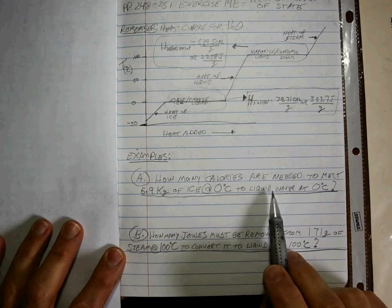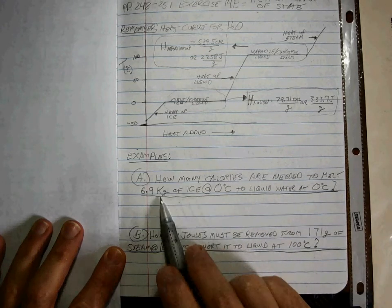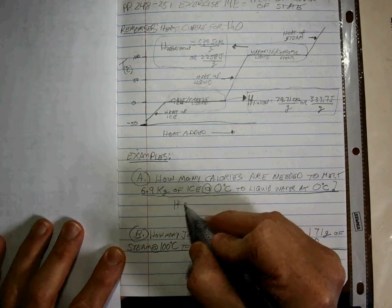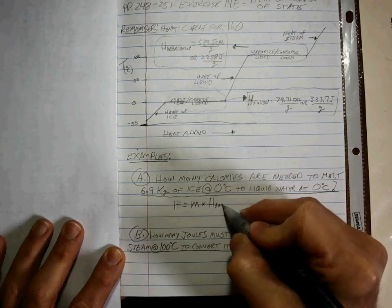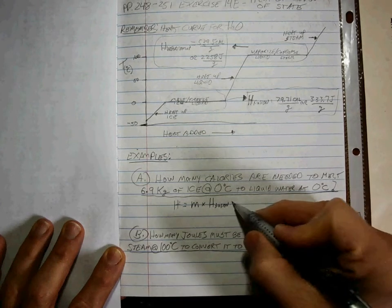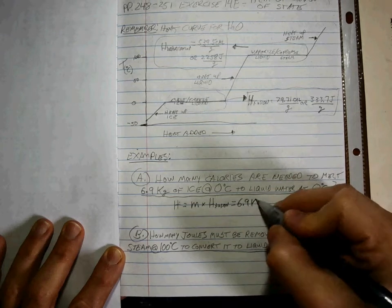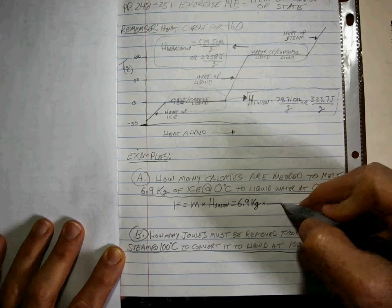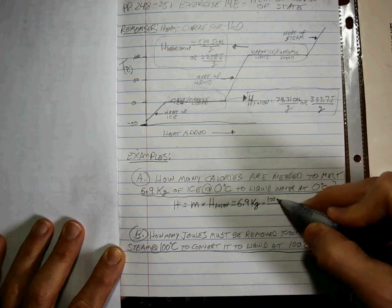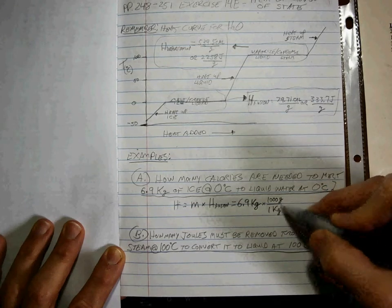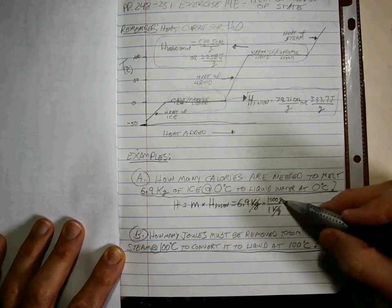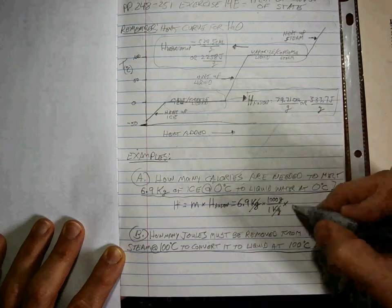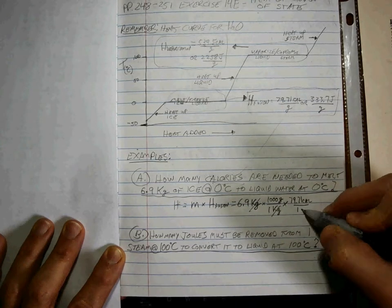So how many calories are needed to melt this much ice at zero into liquid water at zero? So all we're doing is melting the ice. So heat is what we want. That's going to be mass times the heat of fusion because we're dealing with melting ice. The mass is 6.9 kilograms, but if you notice the heat of fusion is in grams, so you have to do this conversion. What's bigger, a kilogram or a gram? A kilogram, which means there's a whole bunch of grams in one kilogram. Do not mix these up. If you have to go back to chapter two to practice this, do it. You got to know your metric to metrics.